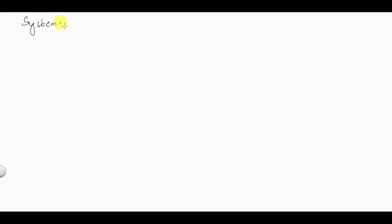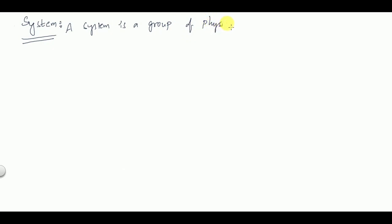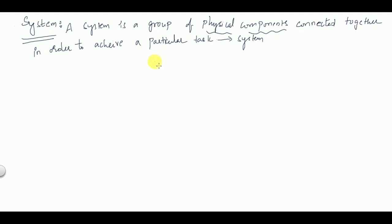First, what is a system? A system is a group of physical components connected together in order to achieve a particular task. These group of physical components may be anything — it may be electrical or mechanical in nature. A group of physical components connected together in order to achieve any particular task is said to be a system. So then, what is a control system?